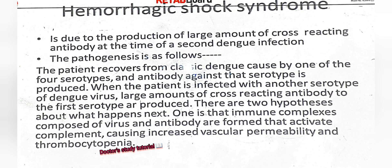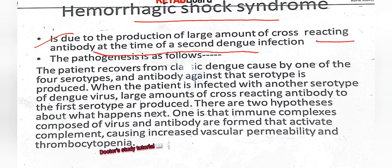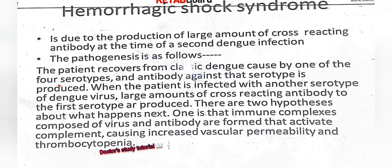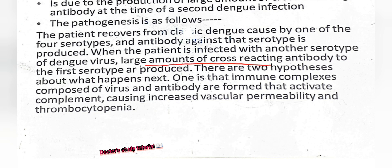Dengue shock syndrome is due to the production of large amounts of cross-reaction antibody at the time of a secondary dengue infection. The patient recovers from classic dengue caused by one of the four serotypes and antibody against that serotype is produced. When the patient is infected with another serotype of dengue virus, large amounts of cross-reaction antibody to the first serotype are produced.